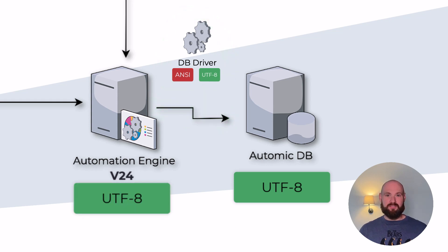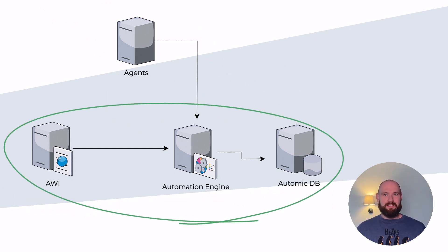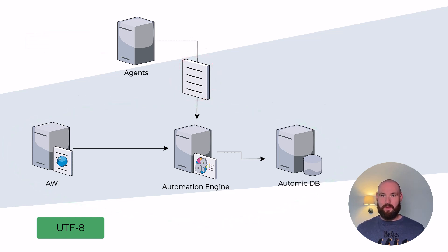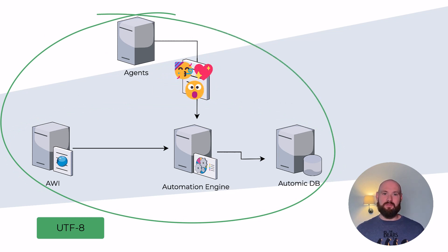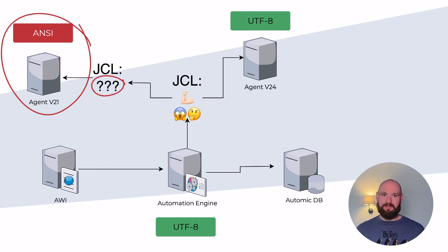If the application supports UTF-8 — i.e., from Automic version 24 — then the database connection must also be reconfigured to UTF-8. Even if the AWI, the automation engine, the database connection, and the database itself support UTF-8, this does not necessarily mean that the advantages of the Unicode character set can be utilized everywhere. Reports from agents of version 21 or lower will continue to be coded to the character sets utilized by those agents. Only when the agent also supports UTF-8 can you finally use emojis in your reports, and only then can Unicode be utilized in the jobs linked to those agents. For old agents, all characters are converted so they correspond to the Latin code bridge. If a character has no direct equivalent, it is replaced by a question mark.